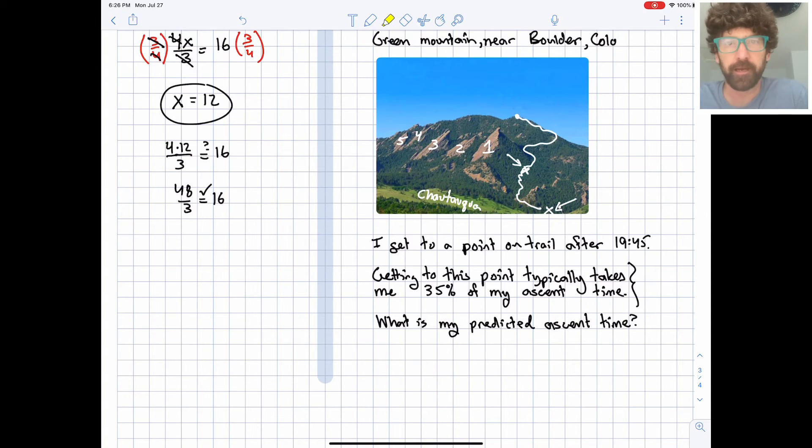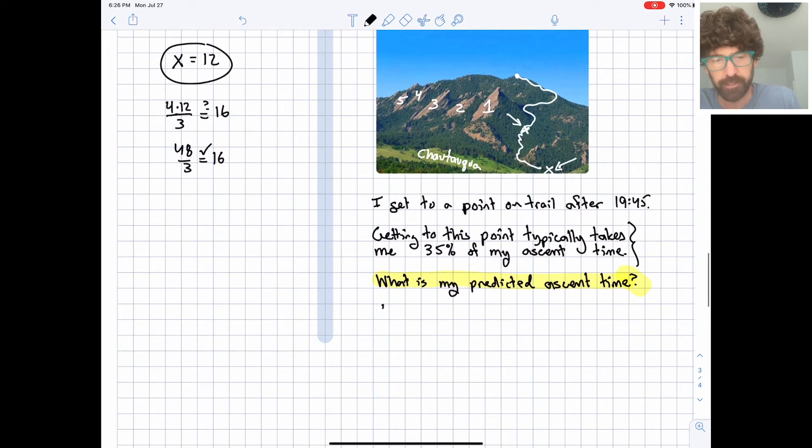One tip I have for you when you're dealing with a real world connection or a real world word problem is to actually look for the question mark. It's right there. And that is going to help you define your variable. What's your predicted ascent time? We don't know, so we're going to call that x. And let's actually define our variable here. So let's let x equal our predicted time.